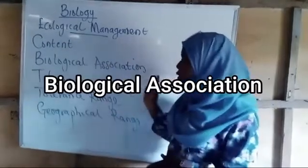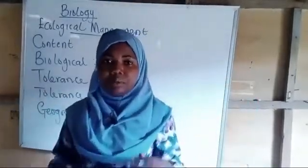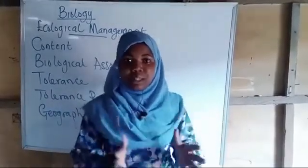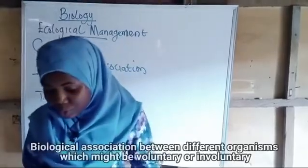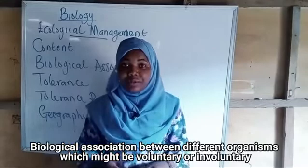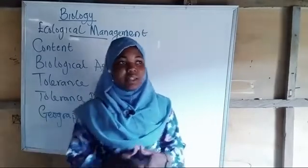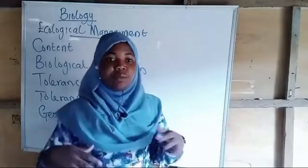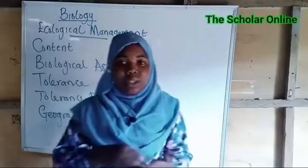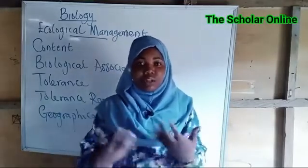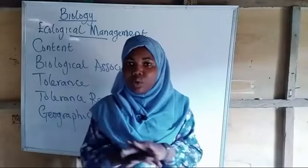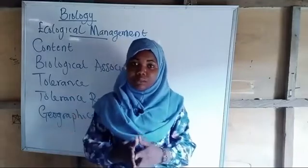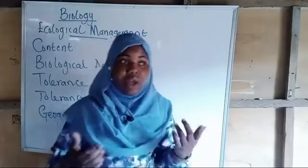Starting with biological association: the word simply means the interaction and way in which organisms in a particular habitat live. It is the biological association between different organisms, which might be voluntary and involuntary. Biological association means how organisms in a particular habitat associate and interact with one another.